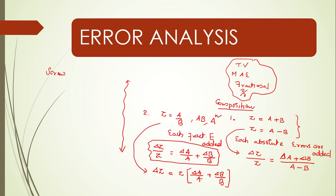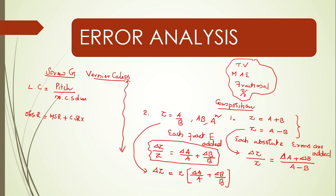Screw gauge and Vernier calipers are very common instruments. For a screw gauge, the least count equals the pitch divided by the number of circular-scale divisions, which is 1. The pitch is the distance moved per number of rotations. The observed reading is main-scale reading plus circular-scale reading multiplied by the least count.